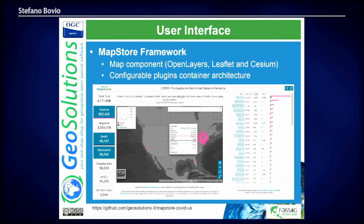The screenshot here shows one of our previous experiments — a MapStore COVID map — where we used MapStore to interact with custom APIs that provided COVID data. With that, we were able to use the plugin infrastructure and architecture to add custom plugins such as counters, tables, and so on.